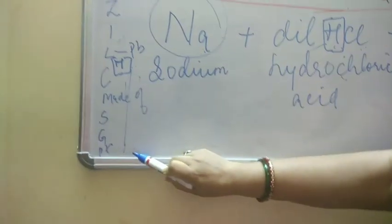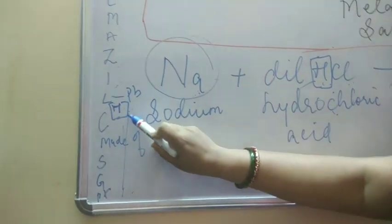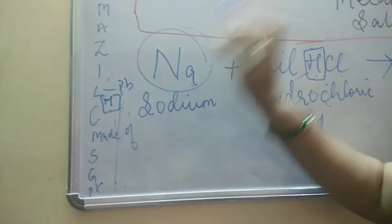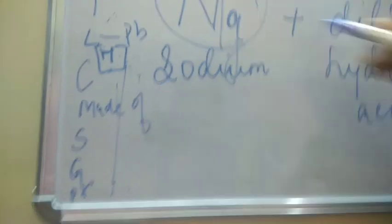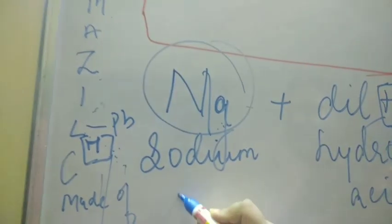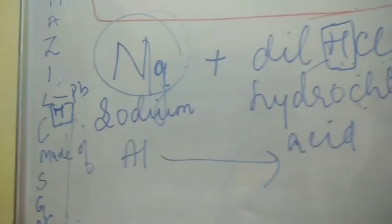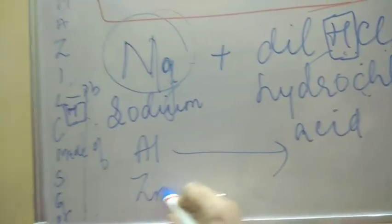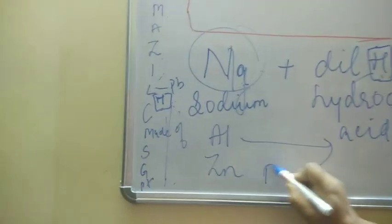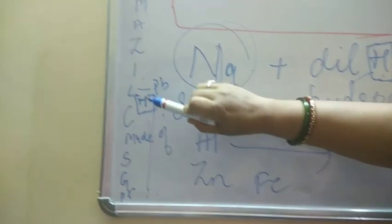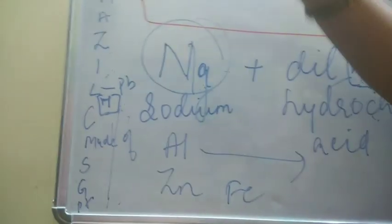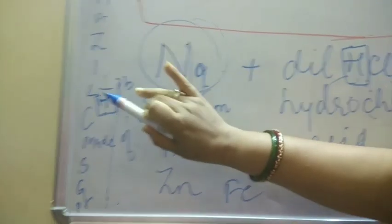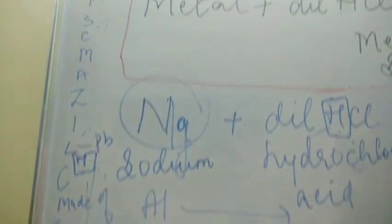So if instead of sodium I write magnesium, you can still displace hydrogen and get MgCl₂. If I write aluminium, aluminium can also displace hydrogen. If I write zinc, zinc will also displace hydrogen. If I write iron, iron will also displace hydrogen - because all these metals are above hydrogen in the reactivity series.